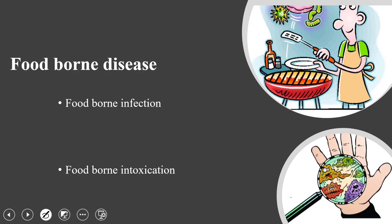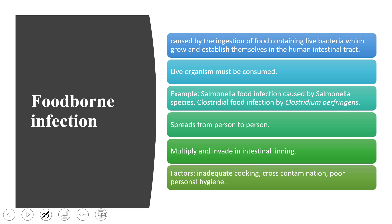Foodborne illness can be classified into two types: foodborne infections and foodborne intoxication. In foodborne infections, there is direct involvement of microorganisms. In foodborne intoxication, there is indirect involvement of microorganisms — and in some cases, microorganisms may not be involved at all.